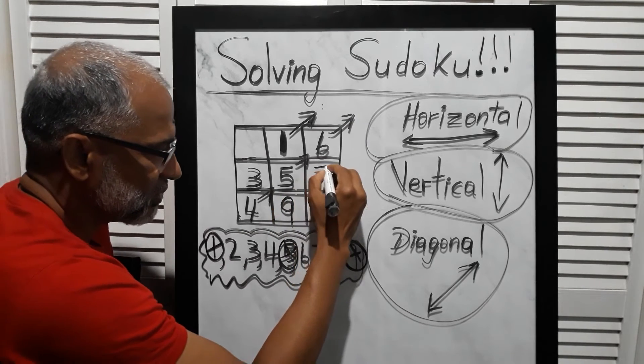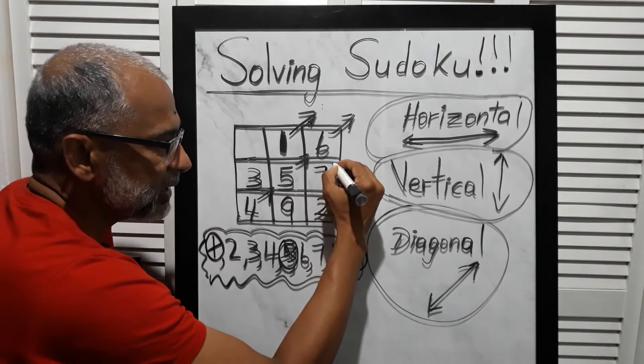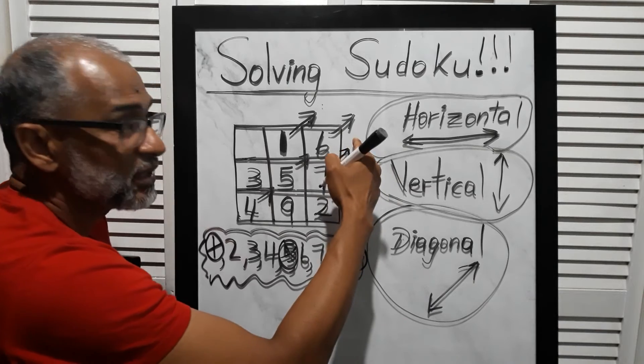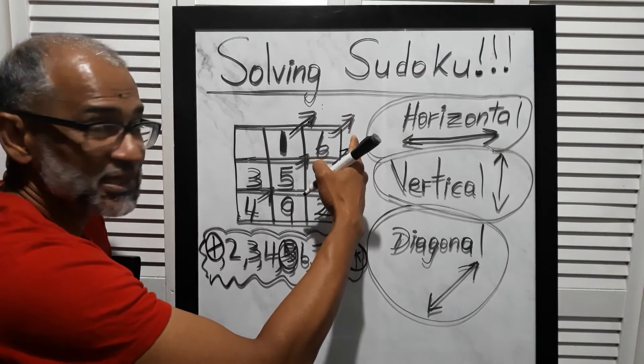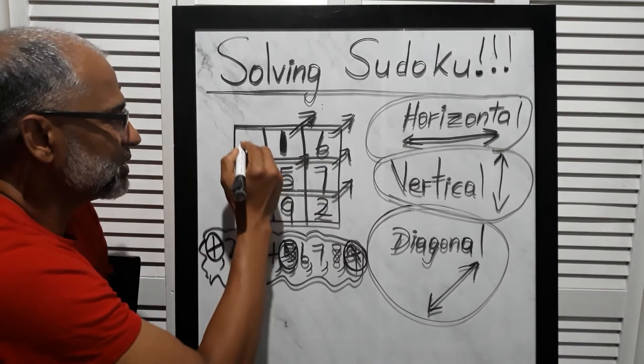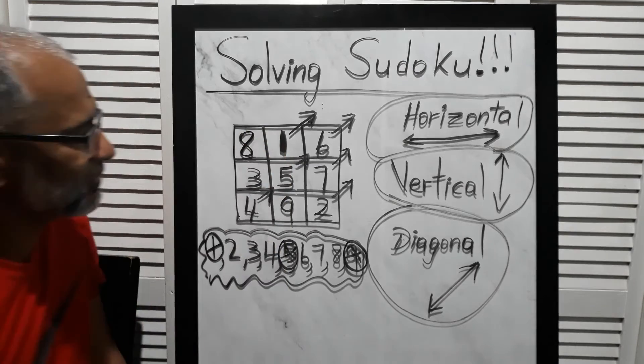We move again diagonally—seven goes outside there, but there's no box there, so we put seven under. Then we move diagonally again, and eight goes outside here, but there's no box here, so we move across—eight. So there you have it.